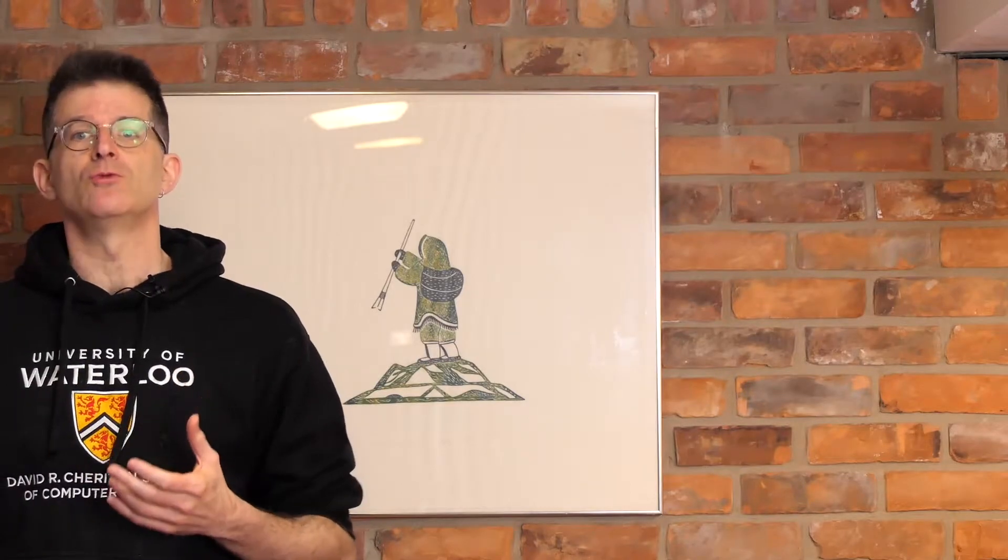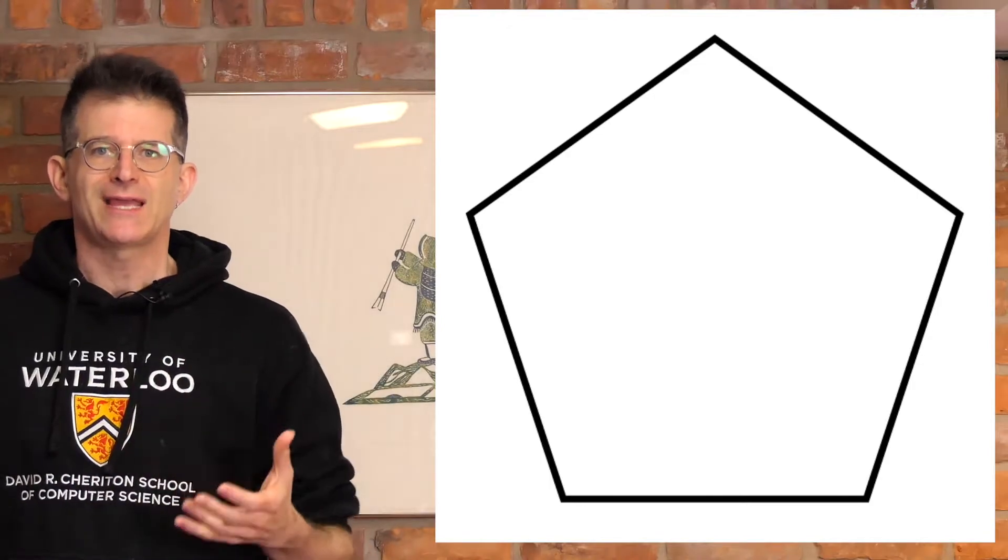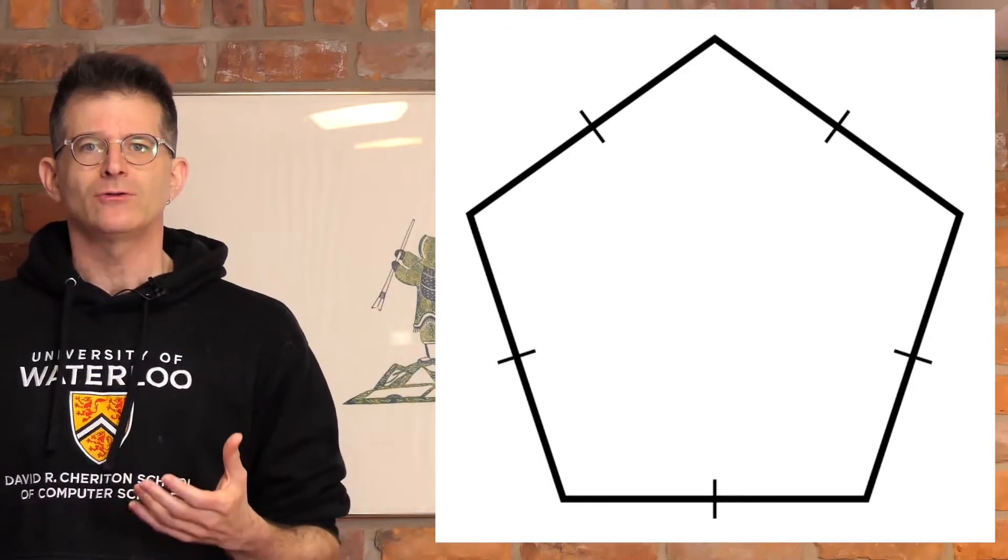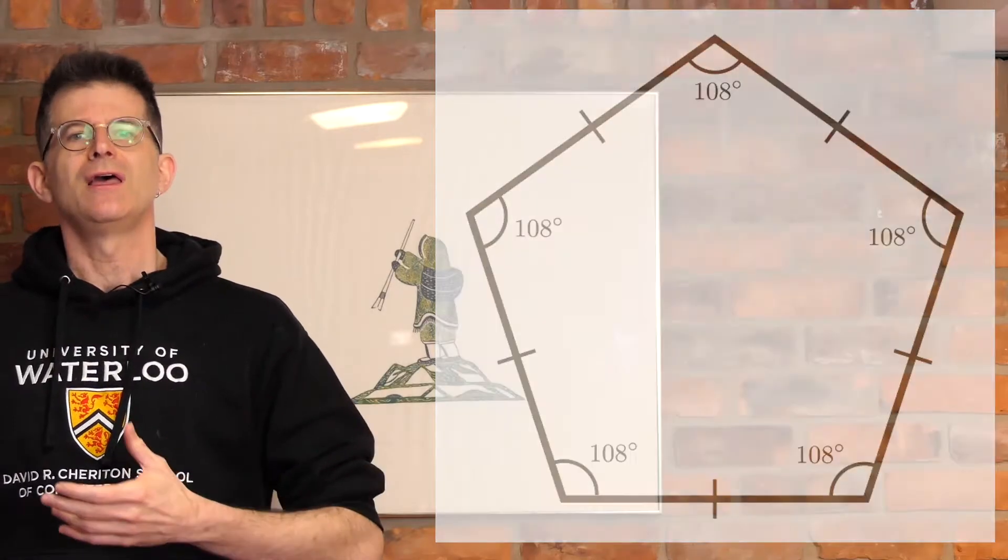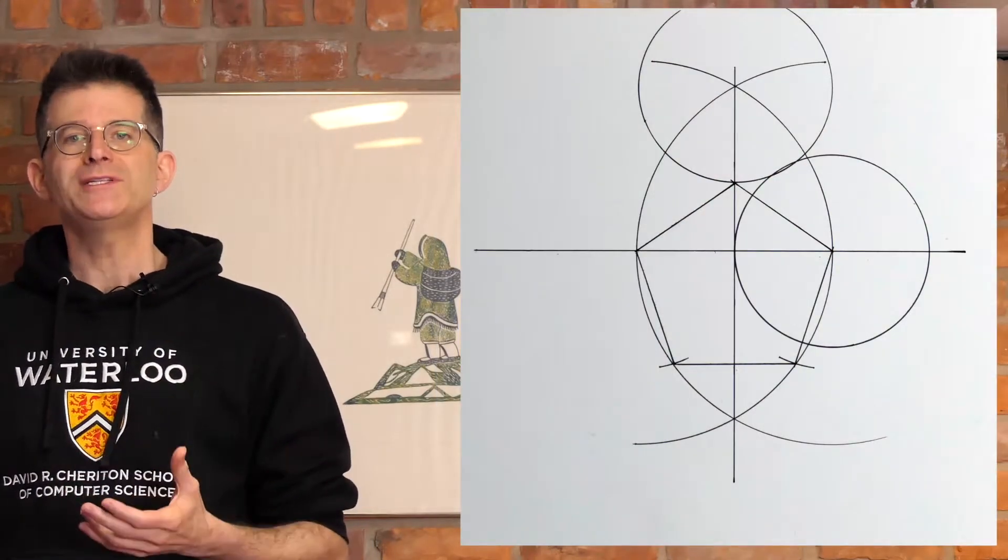Okay, so a pentagon. Where's the sneaky trick? Well, everything I showed you suggests that what I was trying to do was to draw a regular pentagon where all of the edges have the same length and all of the angles are the same, 108 degrees. Is this a regular pentagon? No, it's not.